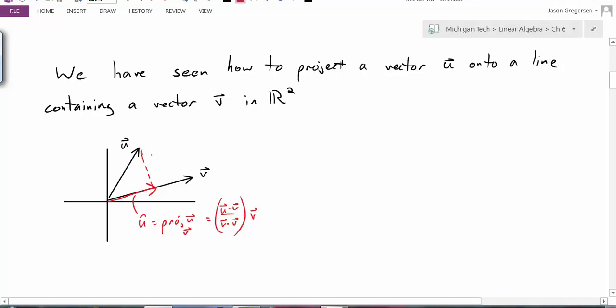We can use that to find a vector that's perpendicular to v, where the sum of u hat and this vector is equal to u. Specifically, we just take u minus our u hat. That will give us this perpendicular vector. We've done that before in R2. We'd like to extend this idea up to Rn.